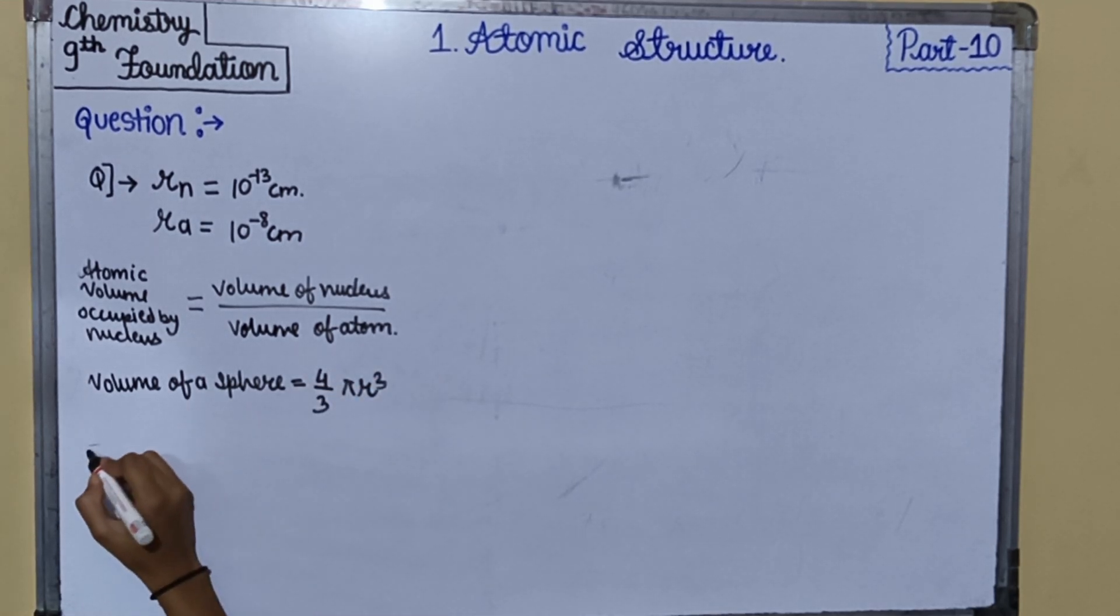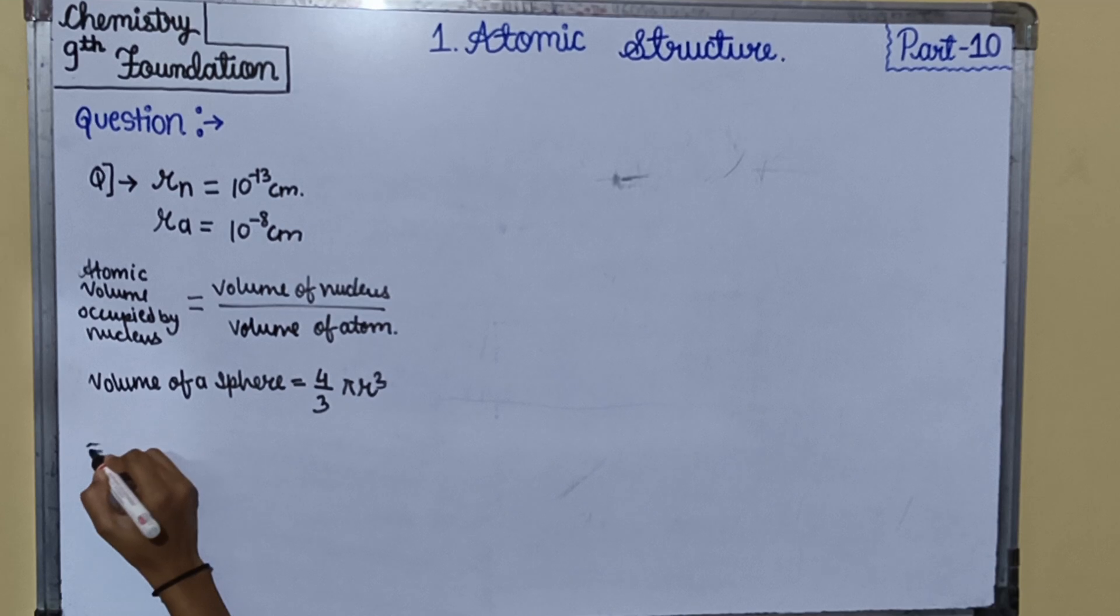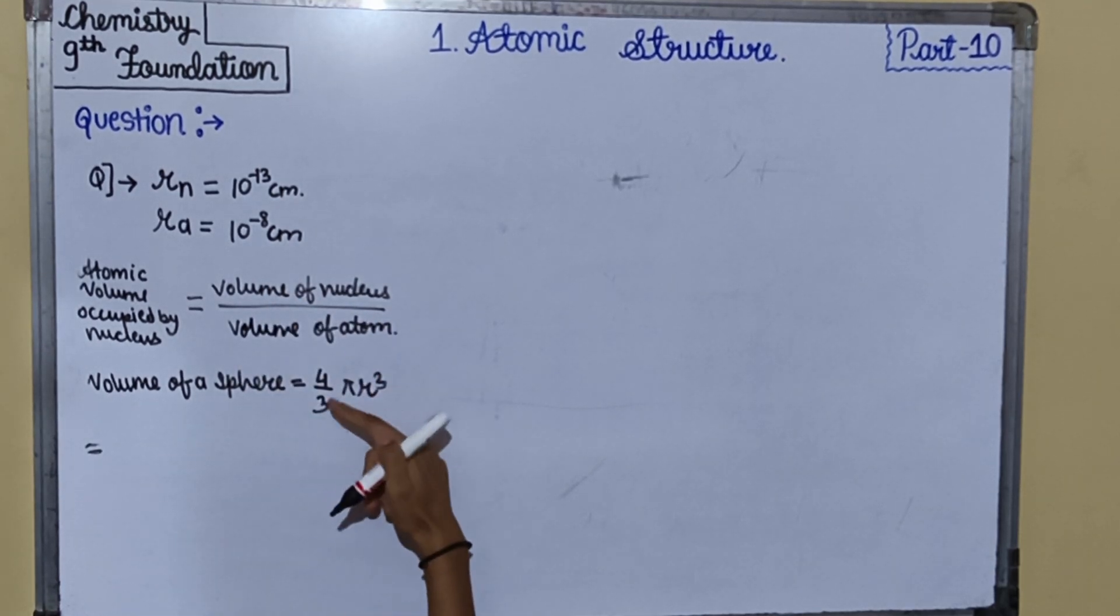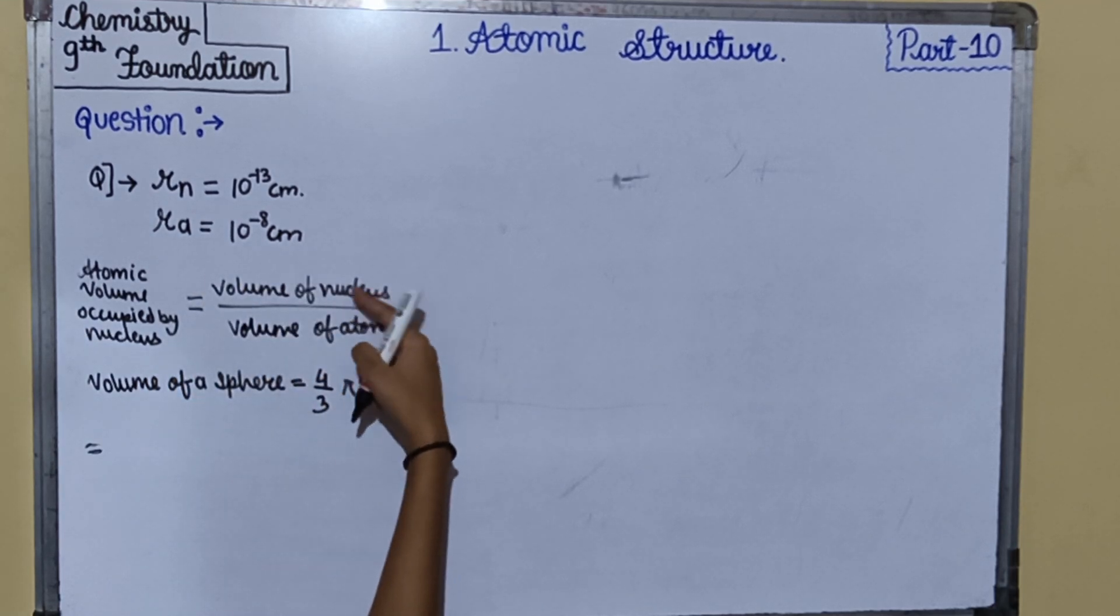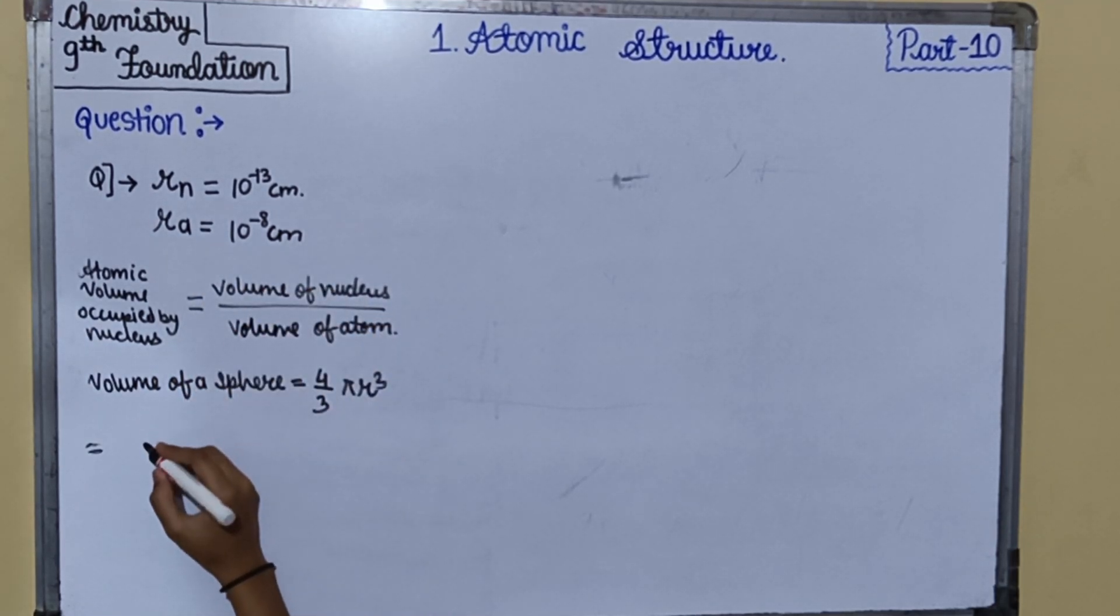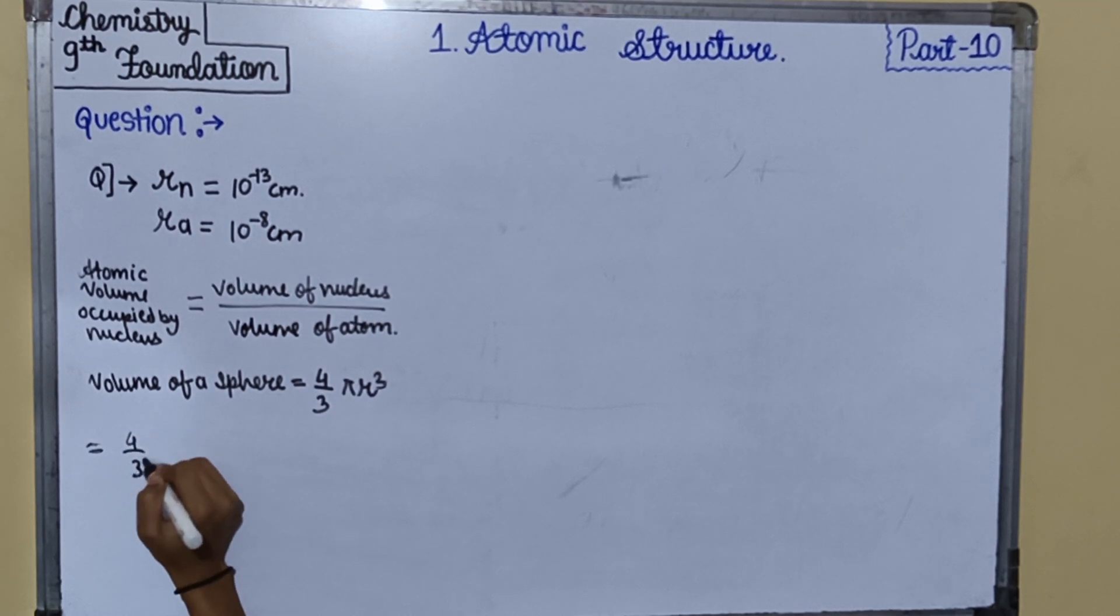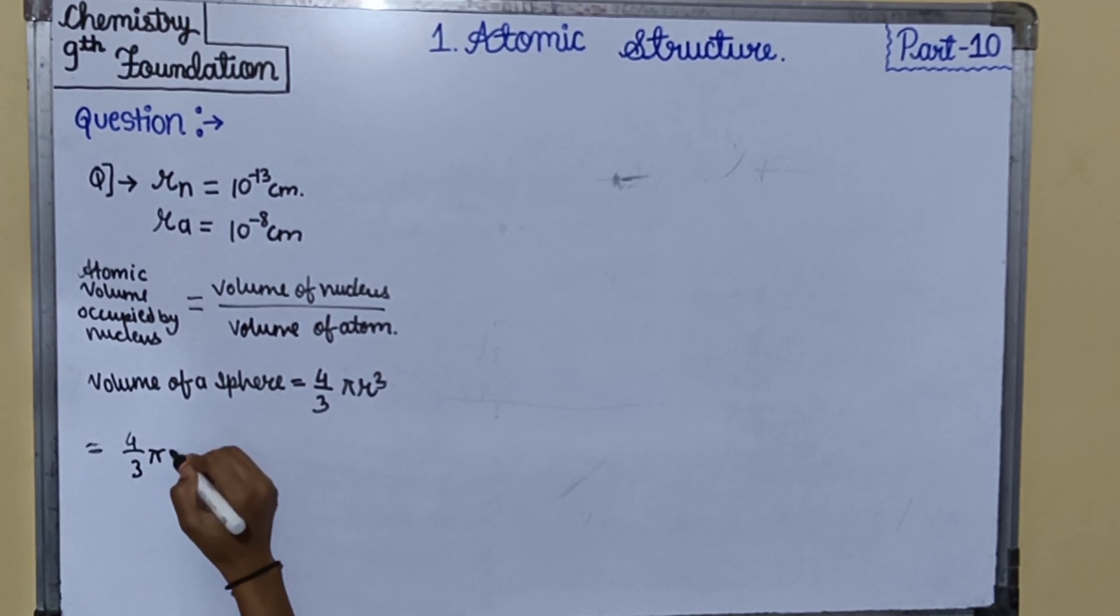We will put the values in this formula. Volume of nucleus means 4/3 π and r means the radius of nucleus, that is 10 raised to minus 13 cm whole cube. 4/3 π into 10 raised to minus 13 cm whole raised to 3.